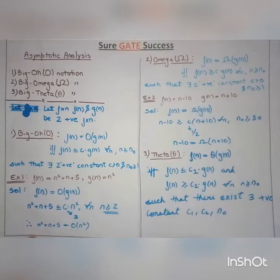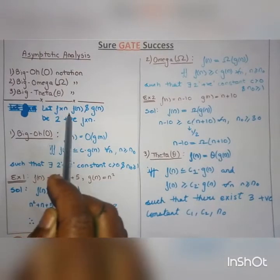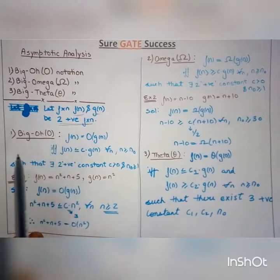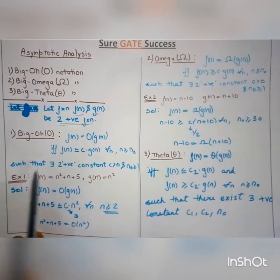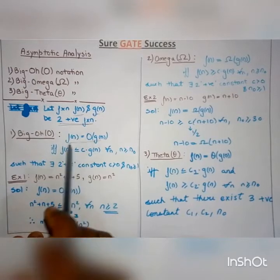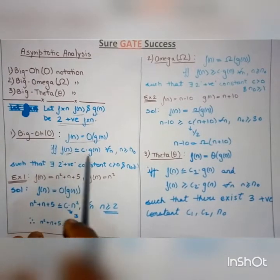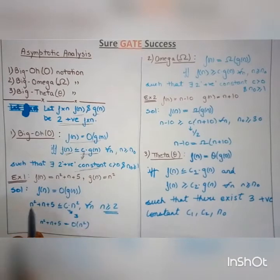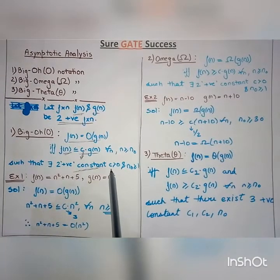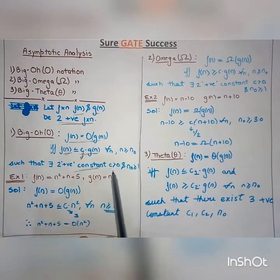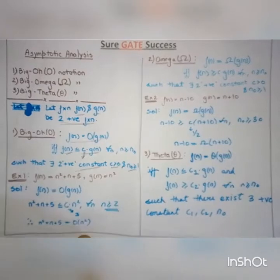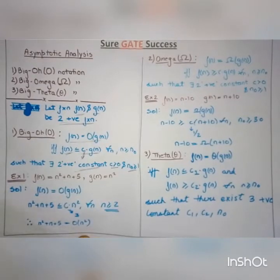For these notations, firstly we have to take two assumptions: let function f(n) and g(n) be two positive functions. The first condition for Big O notation is the function f(n) is Big O of g(n) if and only if f(n) is less than or equal to c·g(n), where c is a constant greater than zero and n₀ is greater than or equal to one.